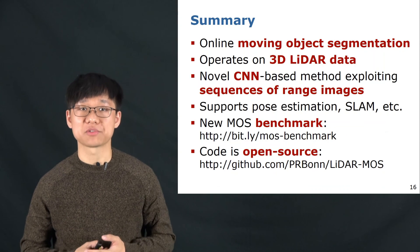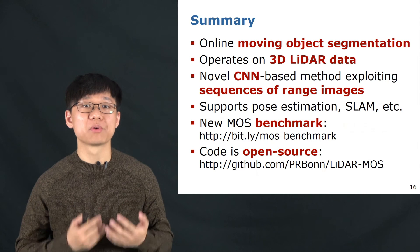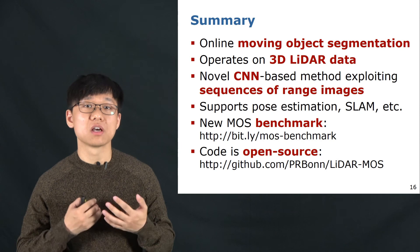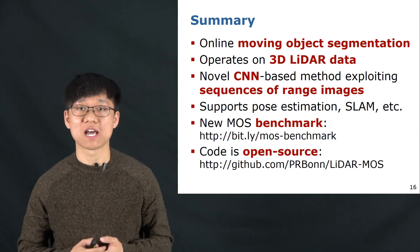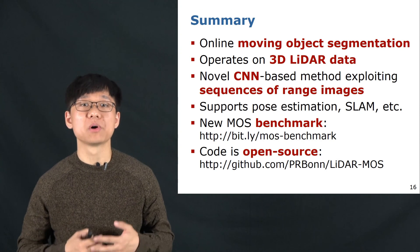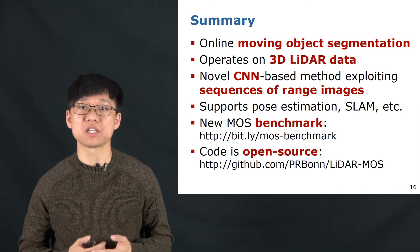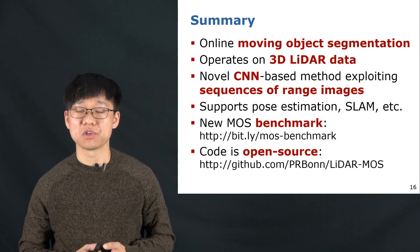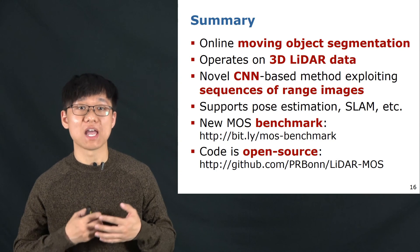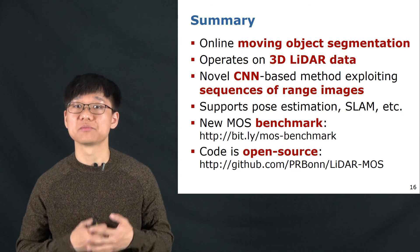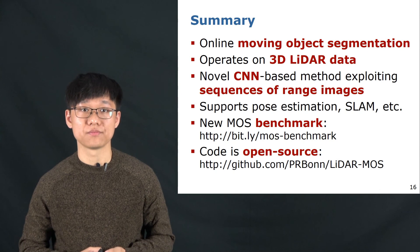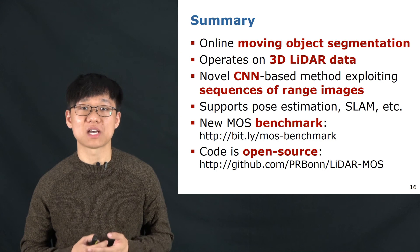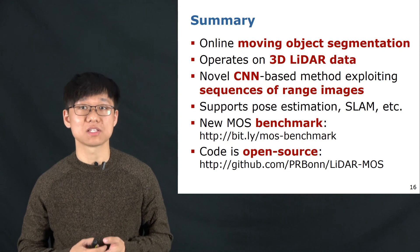To sum up this work: first, we proposed a novel online moving object segmentation method which achieves moving object segmentation on 3D LiDAR data. The proposed method is based on deep learning and neural networks that exploit sequential LiDAR range images using both spatial and temporal information. The proposed method supports a lot of downstream tasks like odometry, mapping, and SLAM.